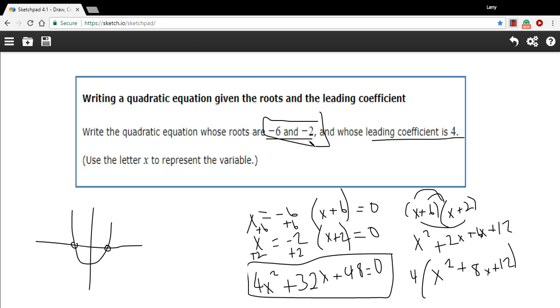Just to review, what we started out is we took the roots. We set x equal to those roots. We set each of those equations equal to zero. Then those became our factors. We foiled those, multiplied those out together. That became our base quadratic equation. And then we multiplied it by this number four because that's what we wanted the leading coefficient to be. That's how to write a quadratic equation when you have the roots and an idea of what the leading coefficient should be.